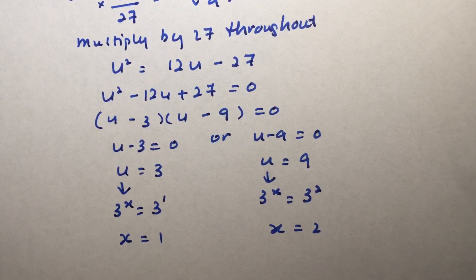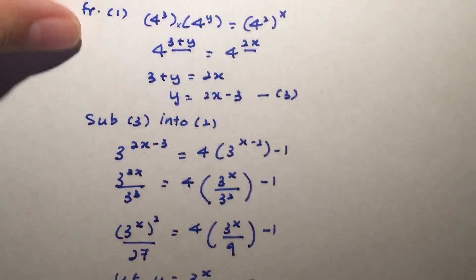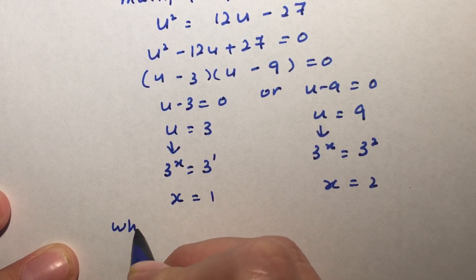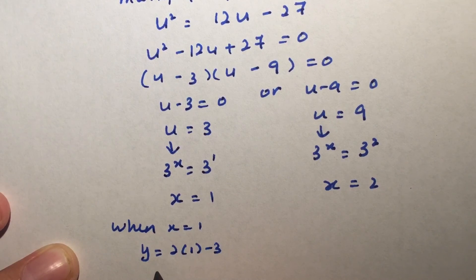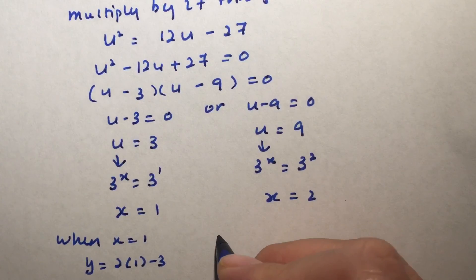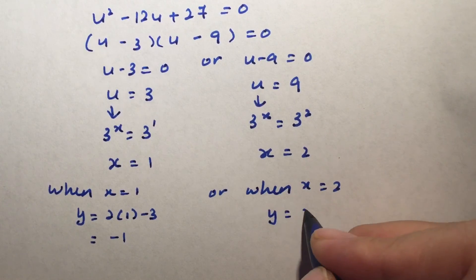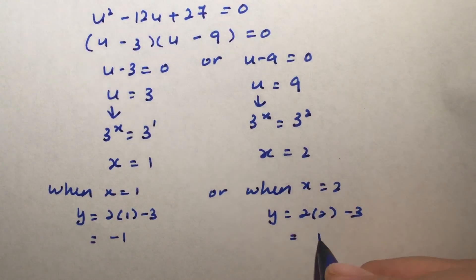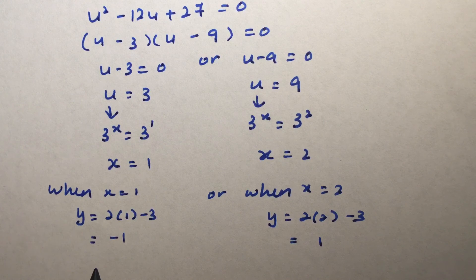Now this is for x. Don't forget, we still have y to consider, right? And in equation 3, we said that y is the same as 2x minus 3. So what we can do is now we write: when x is 1, y is the same as 2 times 1 minus 3, and that will give us negative 1. Or when x is 2, y is the same as 2 times 2 minus 3, which will give us 1. So there you have it. We have when x is 1, y is negative 1, and when we have x equals to 2, y is actually 1. So this is our simultaneous equation. And I'll see you next time.